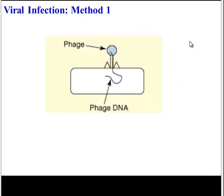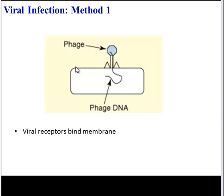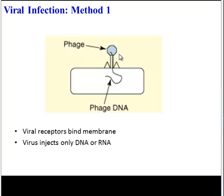So how does a virus infect a cell? One method is shown here by a bacteriophage. A bacteriophage, or phage for short, is a virus that infects a bacterial cell. When it infects a bacterial cell, it first has to bind to the membrane of its host cell, and there are receptors on its capsid that will bind. Once it binds, it can then inject its genetic material, either DNA or RNA, into the cell. The capsid, the protein coat, stays on the outside.